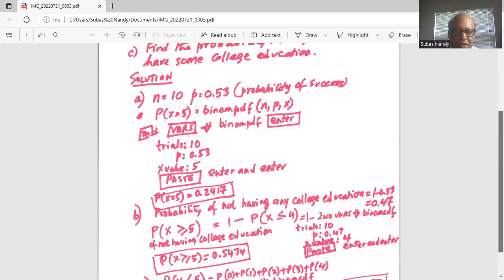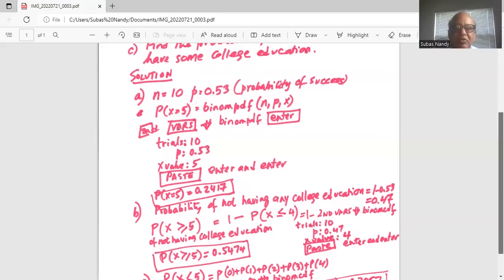So one minus probability starting from zero: x0, x1, x2, x3, and x4, which is taken care of by the function CDF, binom CDF.